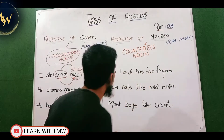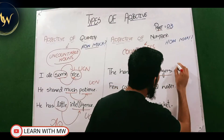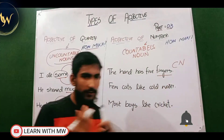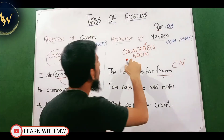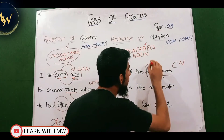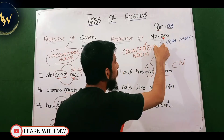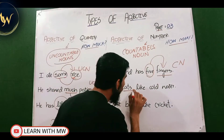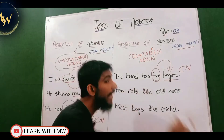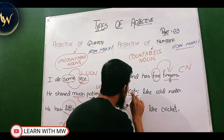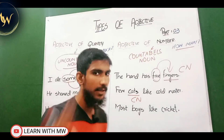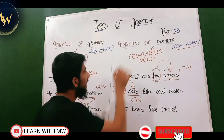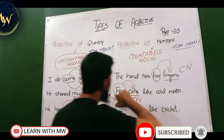Now for adjective of number examples. 'The hand has five fingers' — finger is a countable noun because we can count fingers (1, 2, 3, 4, 5) and can form its plural: one finger, two fingers, three fingers. Five adds meaning to finger, so five is adjective of number because it answers how many and comes with a countable noun. 'Few kates like cold water' — kates is a countable noun because its plural is formed: one kate, two kates, three kates. Few answers how many and comes with a countable noun, so few is adjective of number.